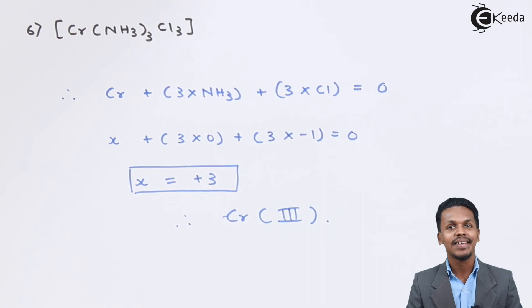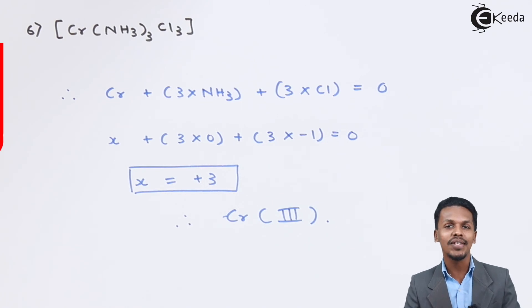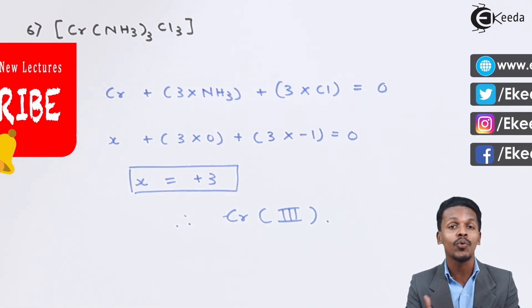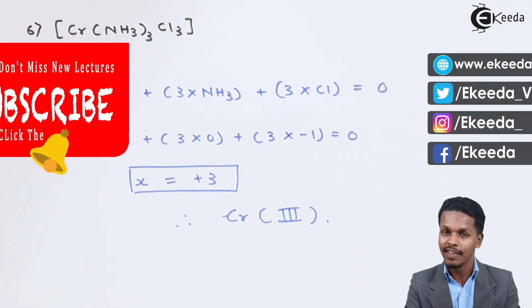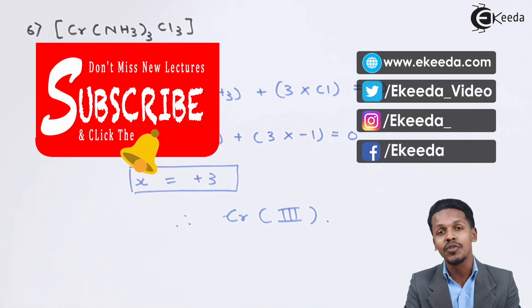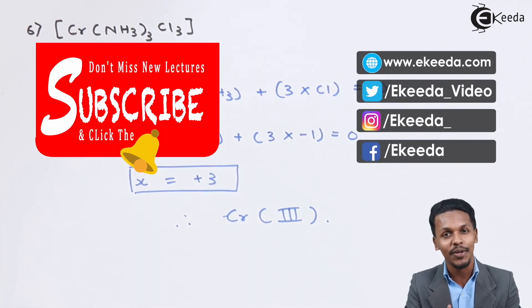So this is how we can calculate the oxidation number of the central metal atom in a complex. Thank you friends for watching this video. I hope you now have a clear idea of how to do this calculation, and I hope to see you next time. Don't forget to subscribe to the channel — thank you so much.